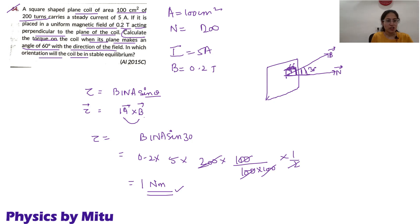In which orientation will the coil be in stable equilibrium? Stable equilibrium, that means when torque is 0, and torque is 0 when theta is 0. That means when the angle between normal and magnetic field is 0. And what is the case?